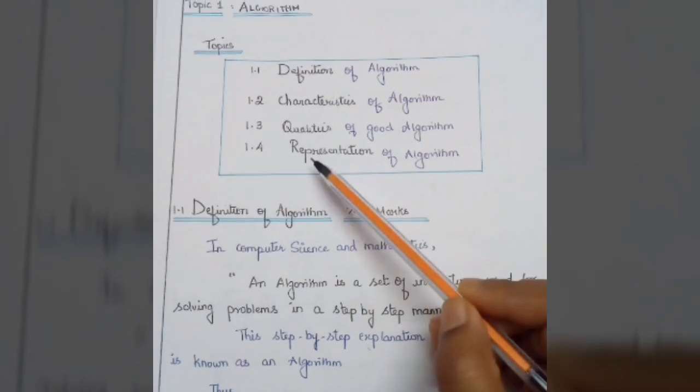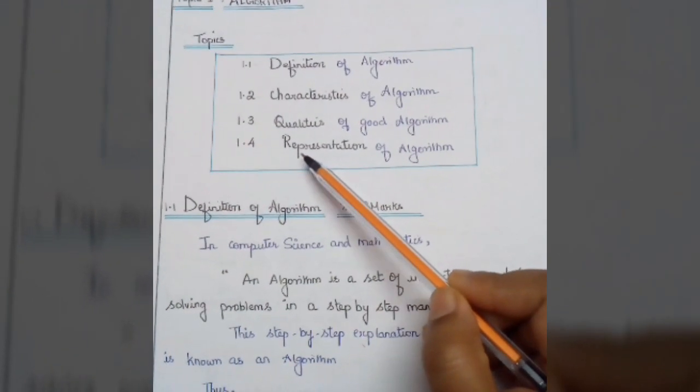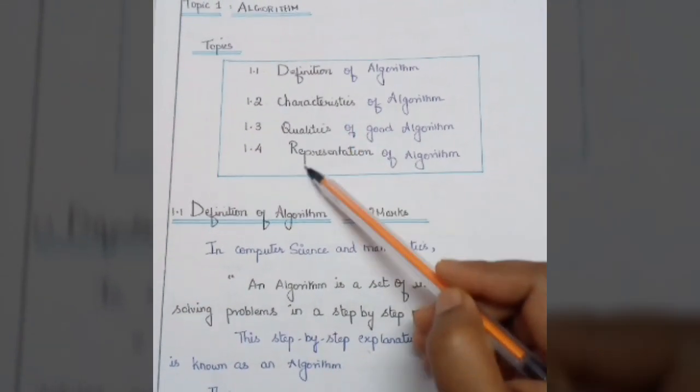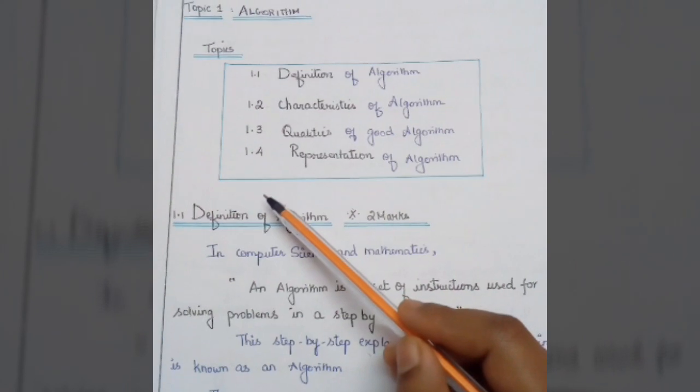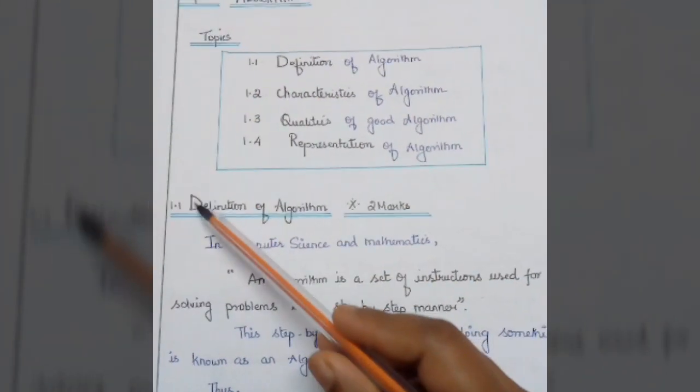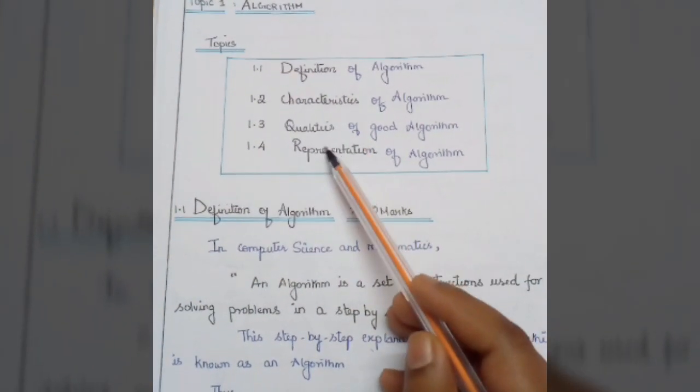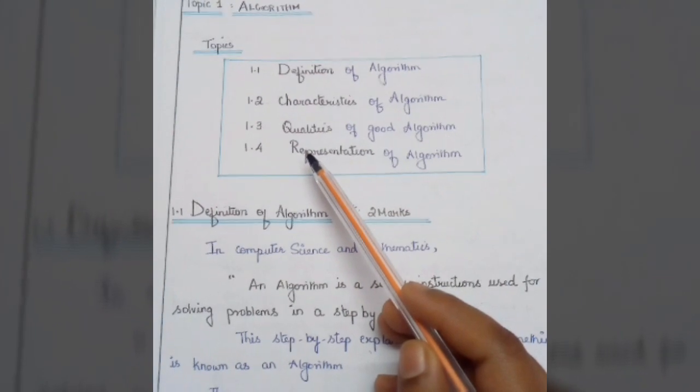When you write a topic which has subheadings like these, it is a clever presentation technique that you list it out and give it a box like this. First, it will have a good impression to the staff who corrects your paper. Second, you can quickly write seeing the subheadings instead of thinking about it in the exam hall.